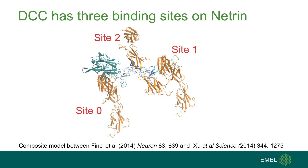However, at the same time, another Netrin-DCC crystal structure was determined by the labs of Tessier-Lavin and Nikolov that identified a third DCC binding site on Netrin. This raised the question: is the clustering of receptors by Netrin more complicated than previously thought?